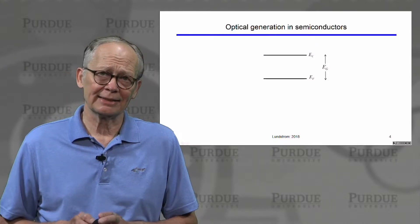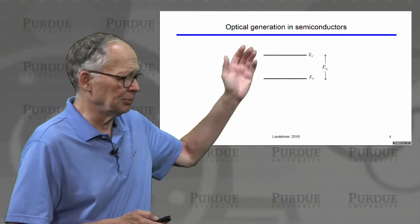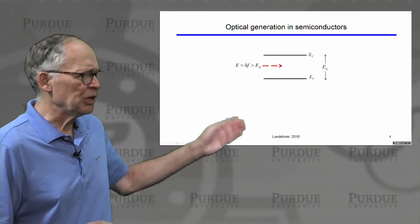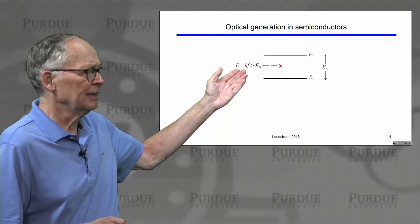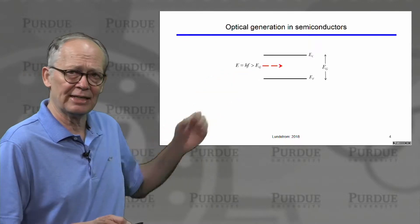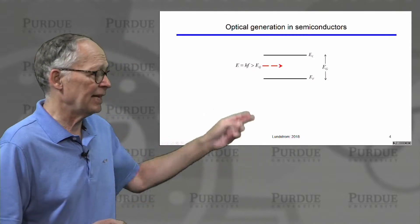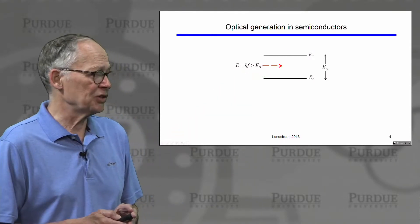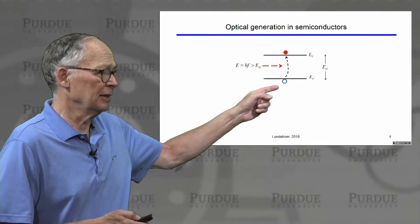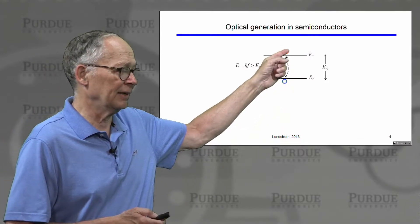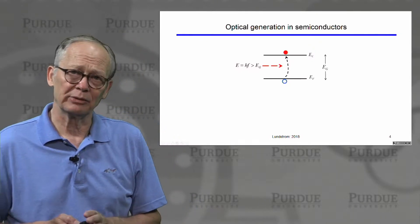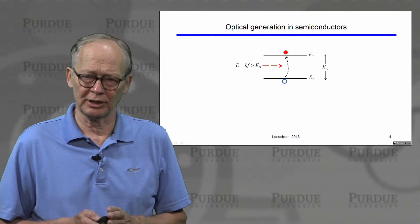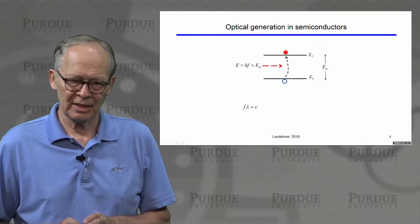The same kind of effects can occur in semiconductors. Here's our simple energy band diagram — a semiconductor with a band gap EG. If we shine light on the semiconductor, the photons have energy equal to Planck's constant times frequency. If that energy is above the band gap, there is sufficient energy to break a covalent bond, move an electron from the valence band into the conduction band. That process creates two free mobile charge carriers — one electron and one hole — each time a photon is absorbed.